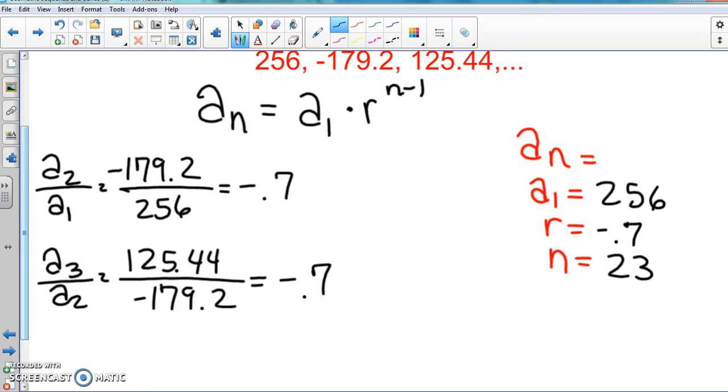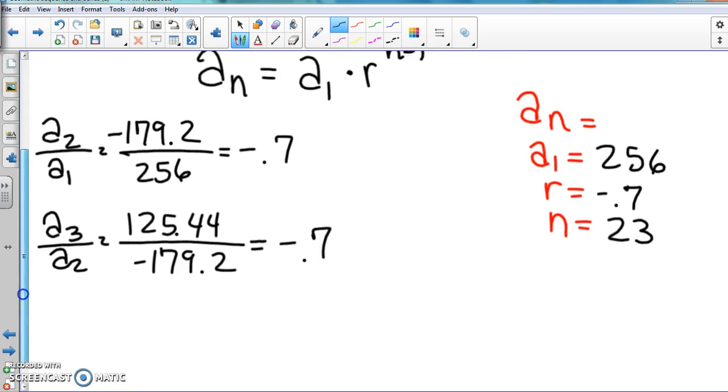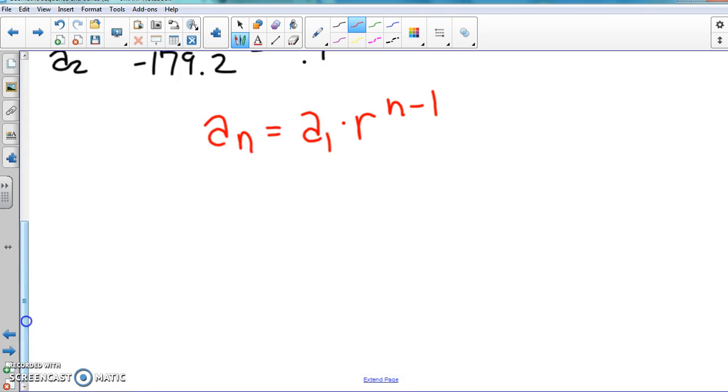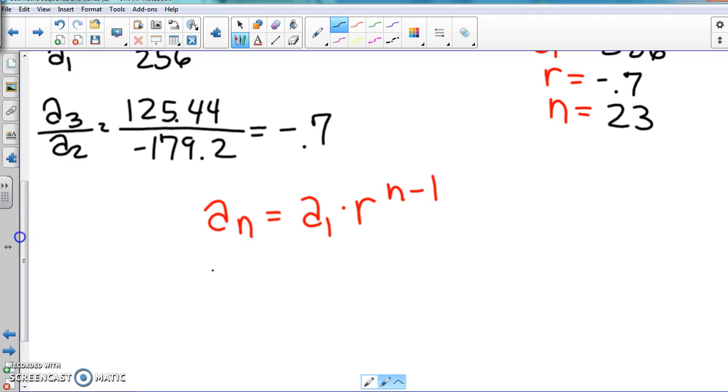All right, all right. So now we have to substitute into the formula and solve it out. That's all we have to do. So I'm going to rewrite the formula again down here. I'm going to fill everything in. We know what it is. a_1 we know is 256, common ratio is what we just found, negative 0.7, parentheses the carat button and then 23 minus 1. I'm going to raise that to the end which is 23rd minus 1.